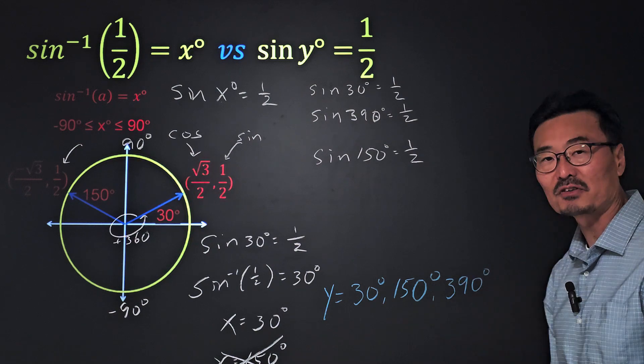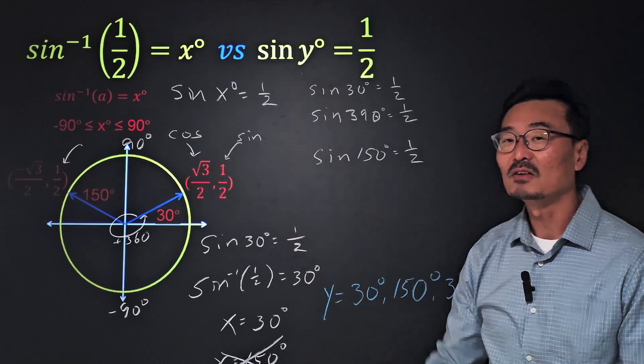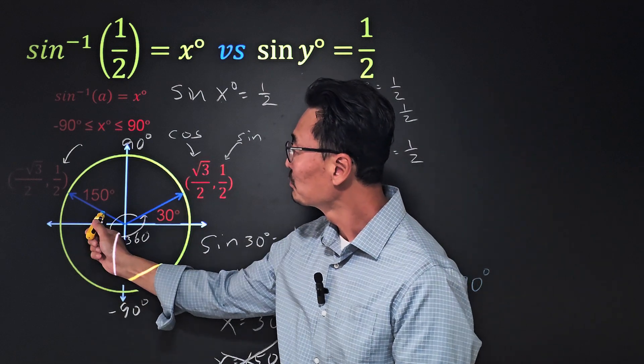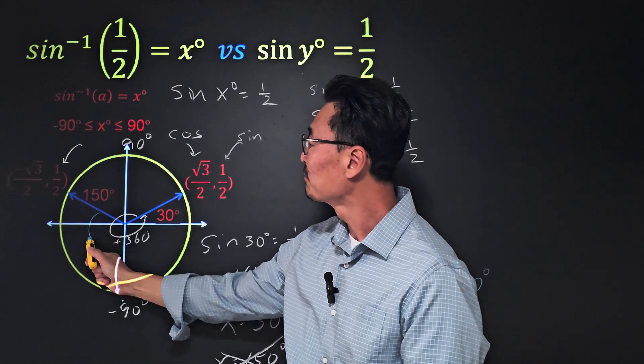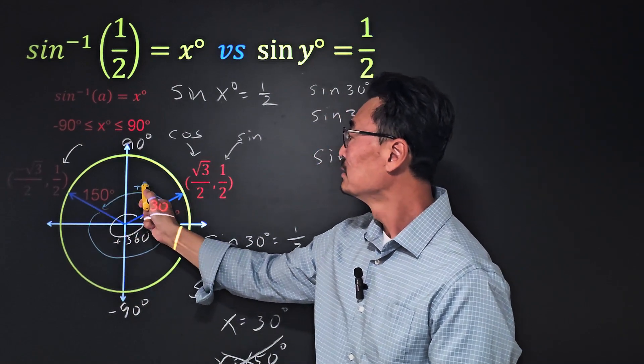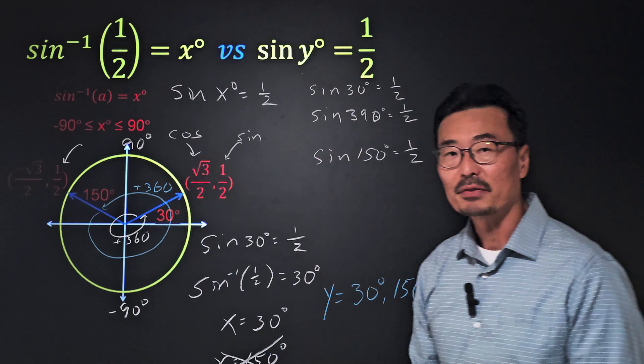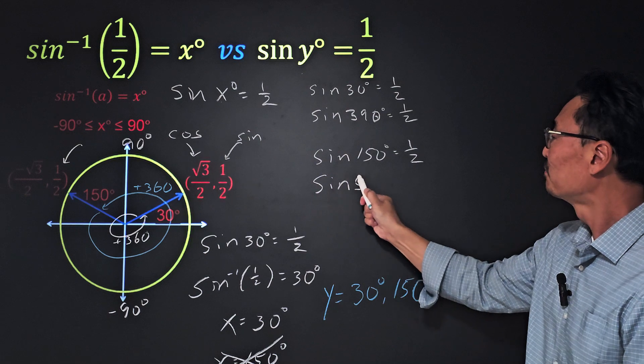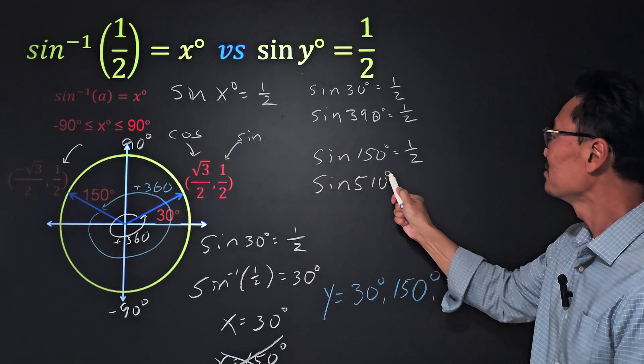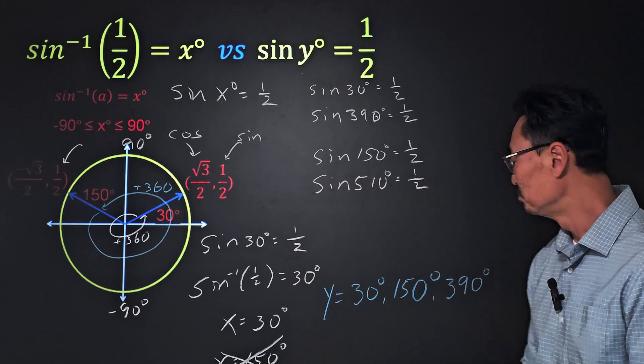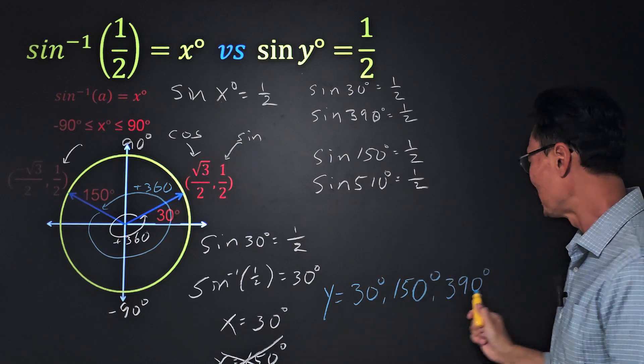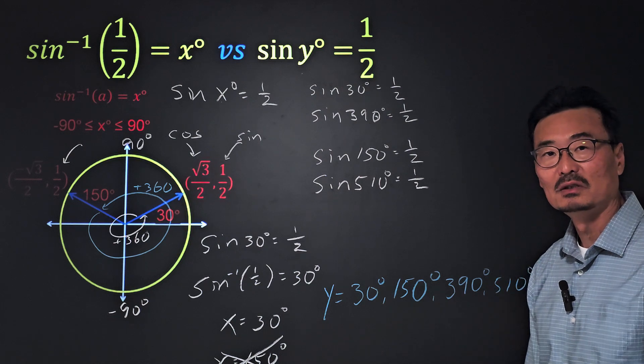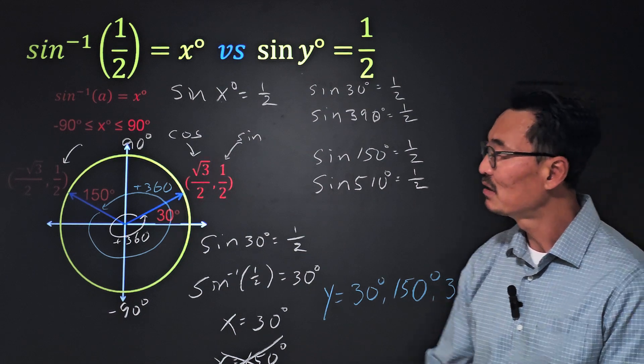What does that mean? We need to go ahead and add 390 degrees as part of our solution to the sine of y equals one-half equation. Same thing if we start from the 150 degrees here, and if I go all the way around adding 360 degrees, then sine of 510 degrees is part of our solution as well.